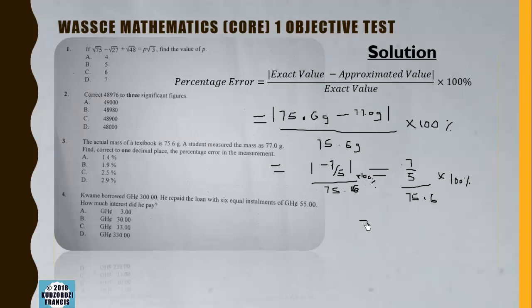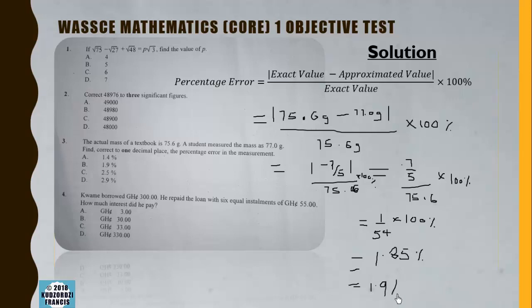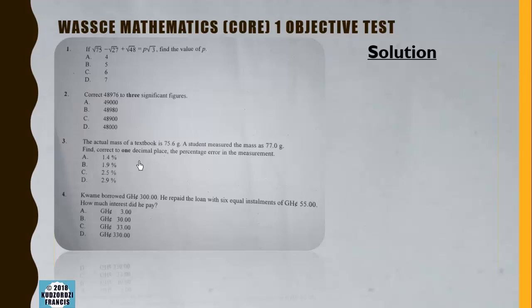Simplifying, we get (1/54) × 100% = 1.85% to 2 decimal places, which rounds to 1.9% to 1 decimal place.